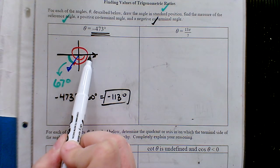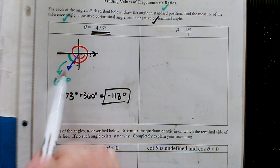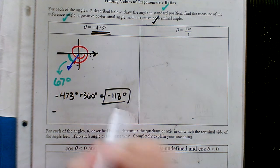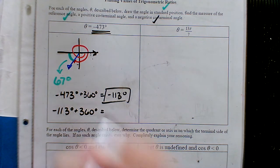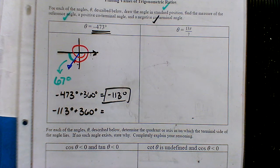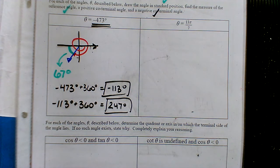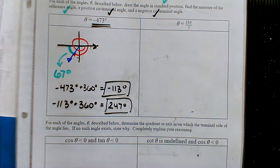That negative 113 would be if we started on the initial side and just traveled backwards to the terminal side — still landing in the same spot. Let's find the positive coterminal angle of 247. Notice how negative 113 is still negative, so let's start with that angle and add another 360. That should take us out of negative values — and we get 247. You could keep adding 360 to find more coterminal angles, or keep subtracting 360 to find negative ones. Coterminal means they land in the same spot and have the same reference angle.